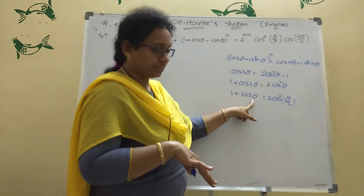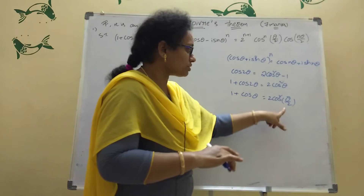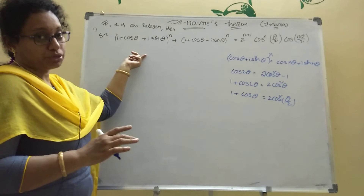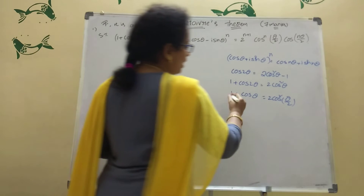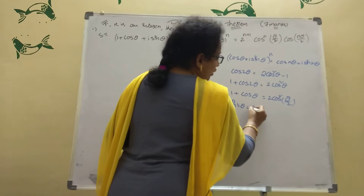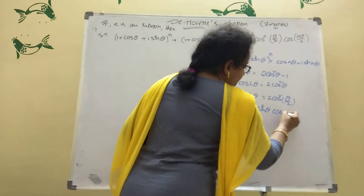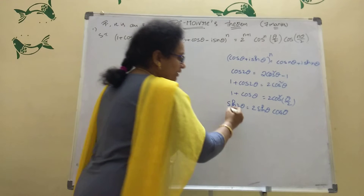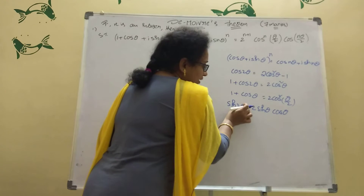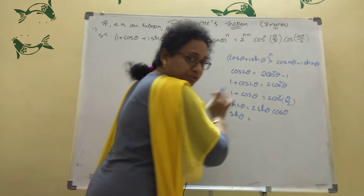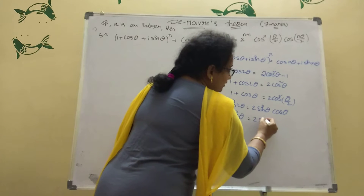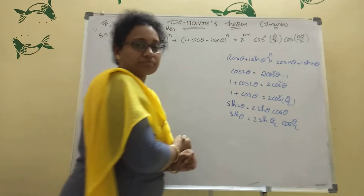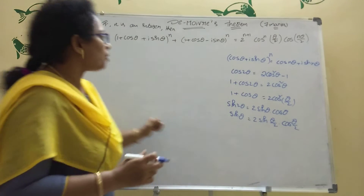Similarly for sinθ using the sub-multiple angle formula: sin2θ = 2·sinθ·cosθ, so replacing θ with θ/2, sinθ = 2·sin(θ/2)·cos(θ/2). Now using these formulas we will do this sum.